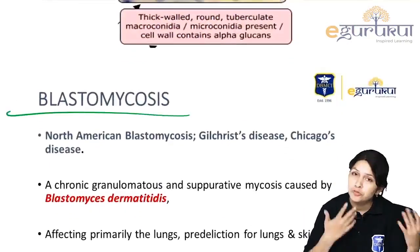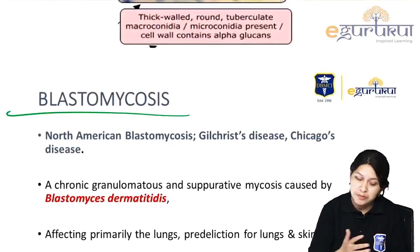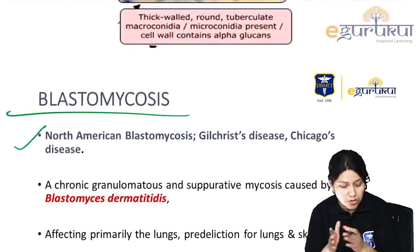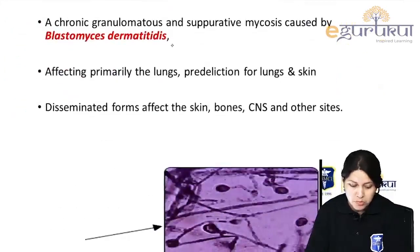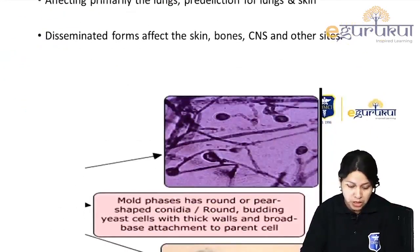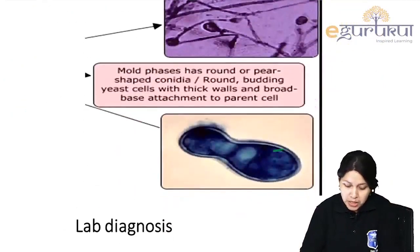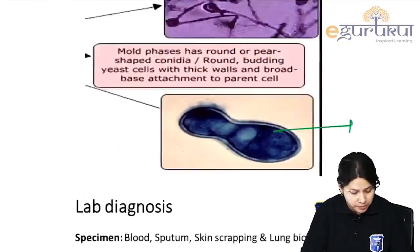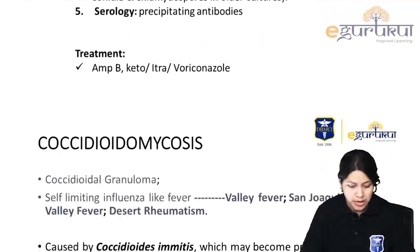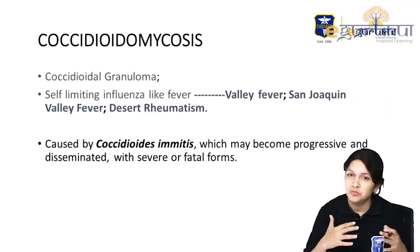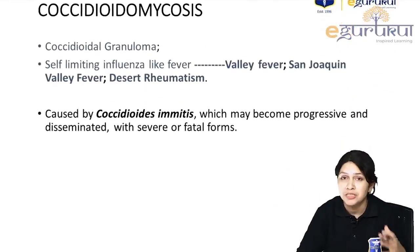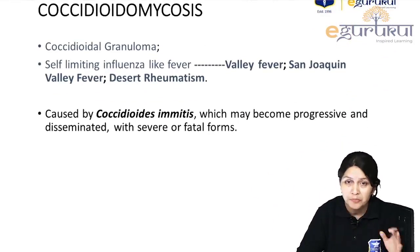Blastomycosis is known as North American blastomycosis, Gilchrist disease, or Chicago disease, caused by Blastomyces dermatitidis. B for broad — the yeast form shows broad-based budding, making a figure-of-8 appearance, used for diagnosis. Treatment and transmission are the same as for all dimorphic fungi.